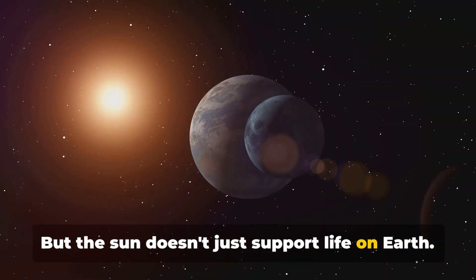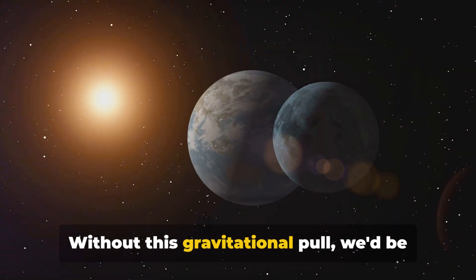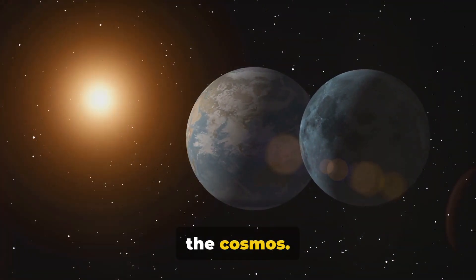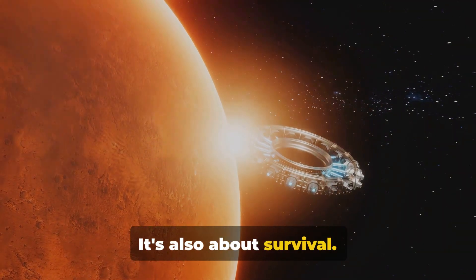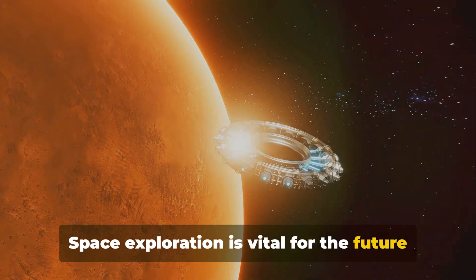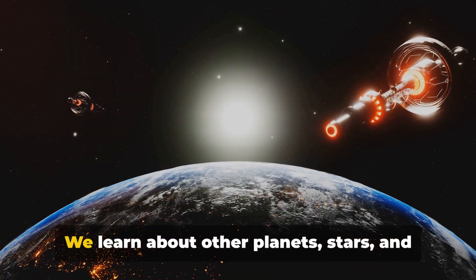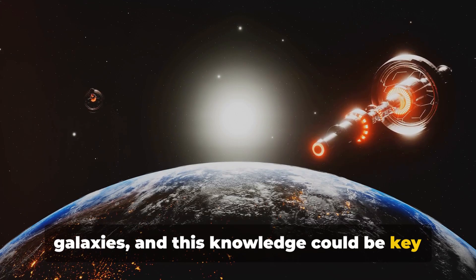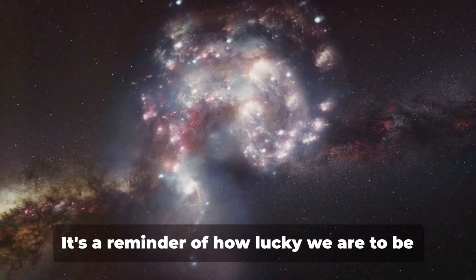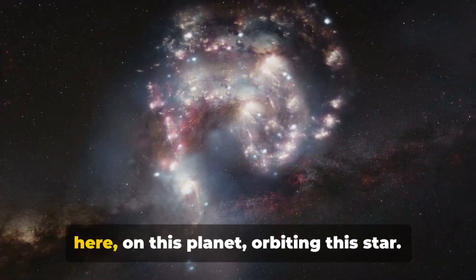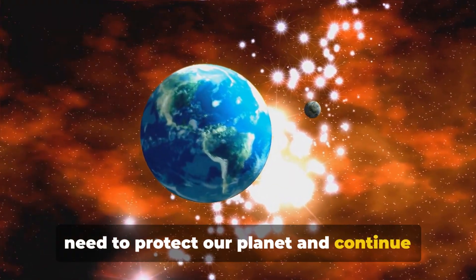But the sun doesn't just support life on earth. It's the gravitational anchor of our solar system, keeping the planets in their orbits. Without this gravitational pull, we'd be a rogue planet, drifting aimlessly through the cosmos. Understanding our solar system is not just about appreciating its beauty and balance. It's also about survival. Space exploration is vital for the future of humanity. As we venture further into the cosmos, we learn more about our place in the universe. We learn about other planets, stars, and galaxies, and this knowledge could be key to our survival as a species. Our solar system is a testament to the incredible complexity and beauty of the universe. It's a reminder of how lucky we are to be here, on this planet, orbiting this star. It's a call to action, a reminder that we need to protect our planet and continue exploring the cosmos.